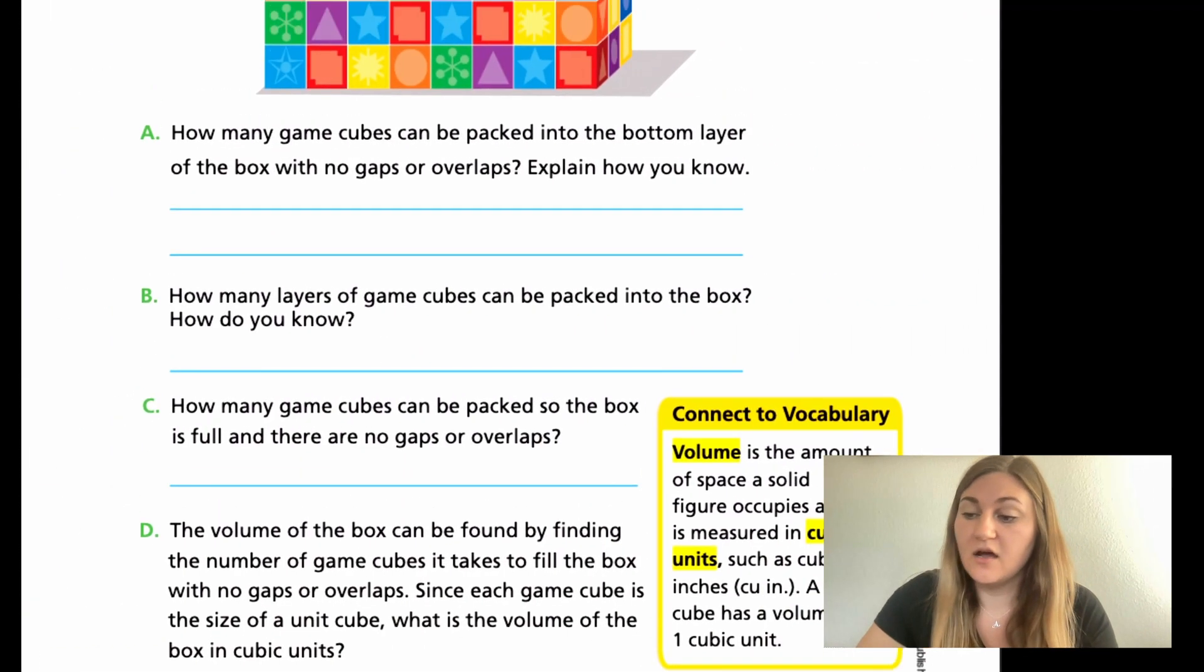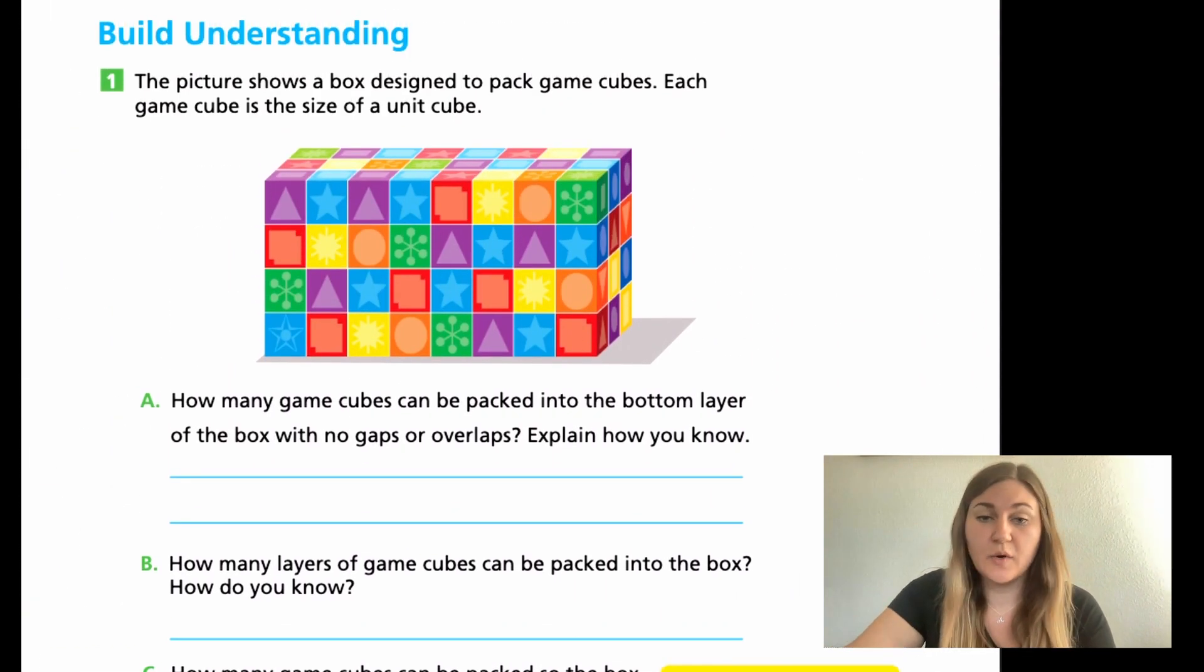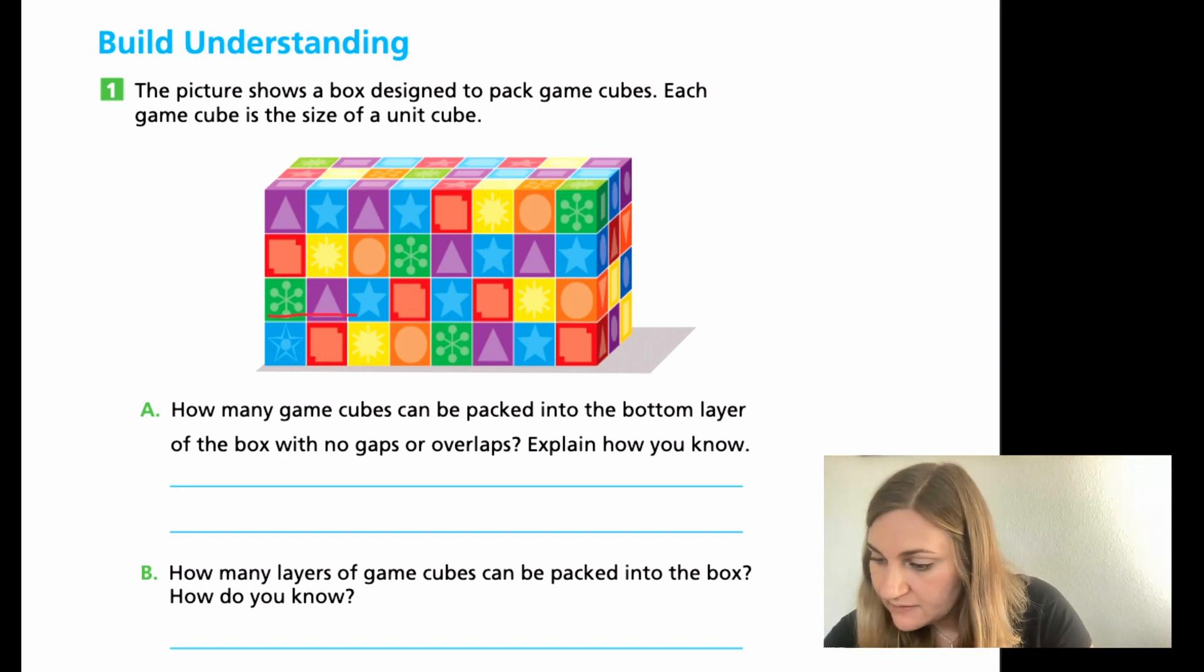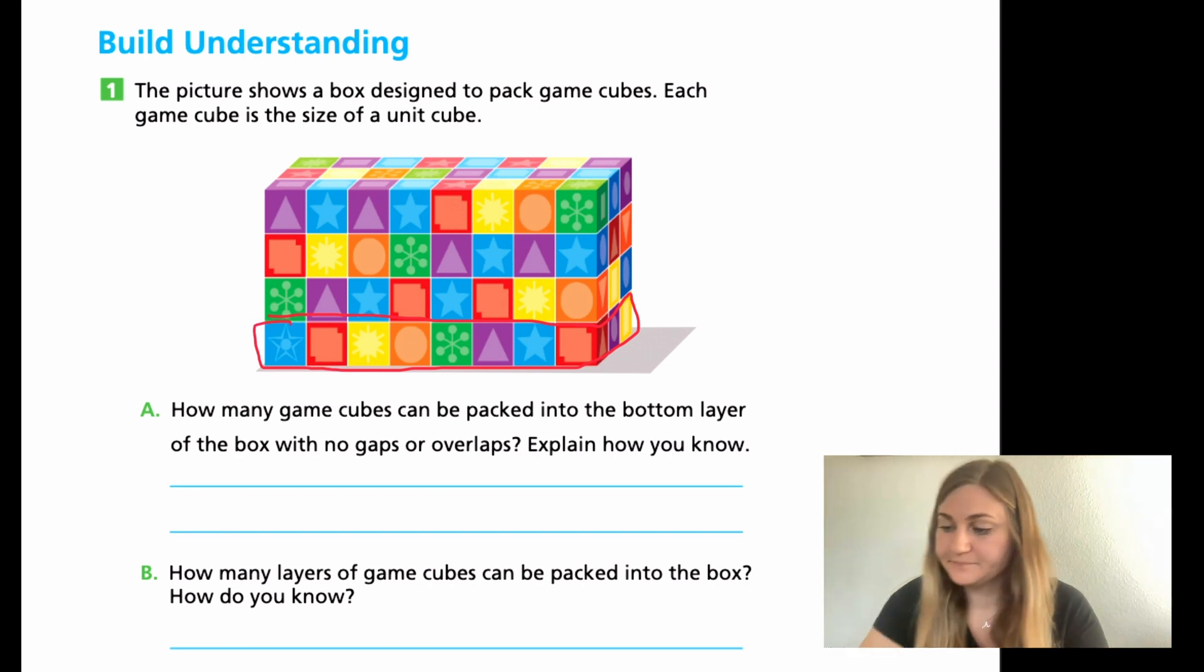Let's jump into the lesson under the build understanding question number 1. It says the picture shows a box designed to pack game cubes. Each game cube is the size of a unit cube, which means just 1 by 1 by 1. So I'm going to have you do A, B, C, and D, but first I want to read through and kind of explain what they're asking. So for A, it says how many game cubes can be packed into the bottom layer of the box with no gaps or overlaps. So remember just the bottom layer, what they're asking is here, just that bottom line.